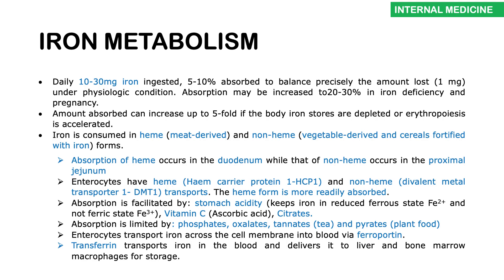Iron can exist in two states: the ferrous form (Fe²⁺) or the ferric form (Fe³⁺). Stomach acid is very important because it keeps iron in the reduced ferrous form, which is much easier to absorb. If you give someone a proton pump inhibitor or if someone has had a gastrectomy — reducing acidity — iron shifts to the ferric form, which is harder to absorb, and they could develop iron deficiency.